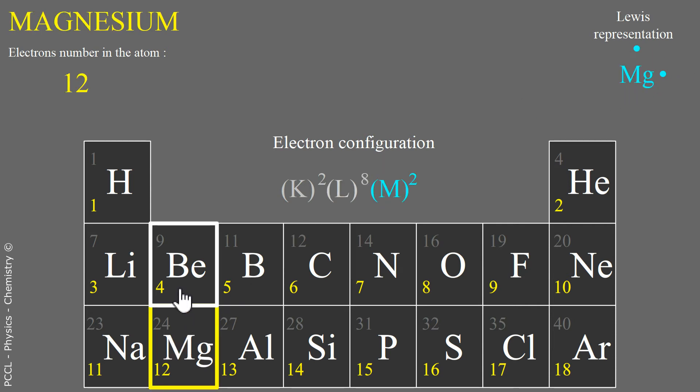His Lewis diagram is the same on all the column. It will always be true. Same column, same diagram.